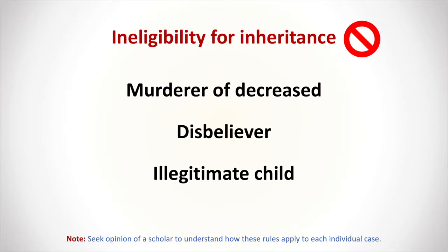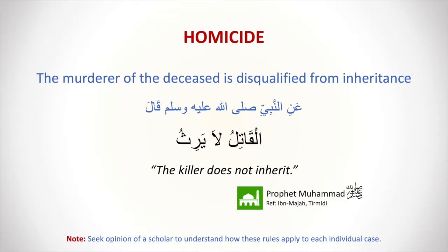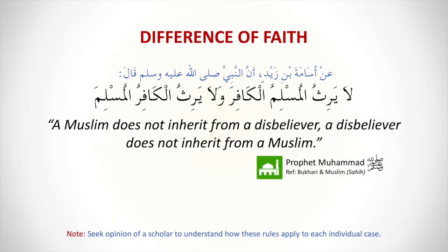The scenarios which make a person ineligible for inheritance are three: a murderer of the deceased (homicide), a disbeliever, and an illegitimate child. It is highly recommended to seek a local scholar's opinion to understand how these principles apply to your specific scenario. Regarding homicide, Prophet ﷺ clearly said: 'Al-qatilu laa yarithu' — the killer does not inherit. If someone kills anyone, they cannot inherit anything from that person.